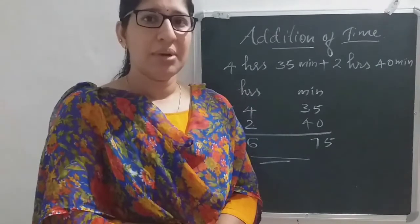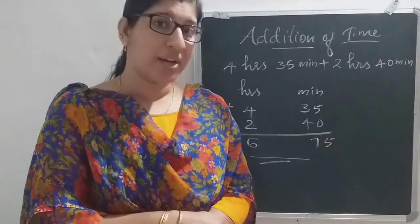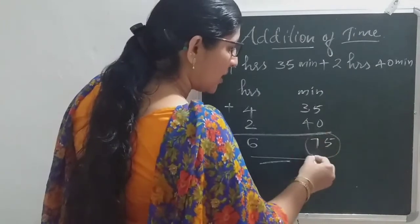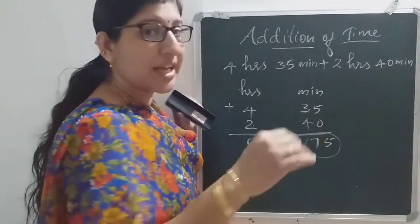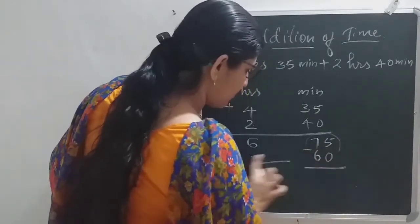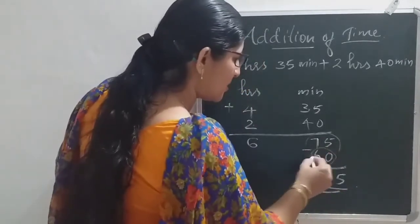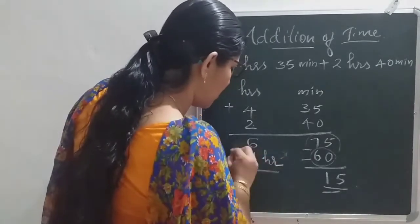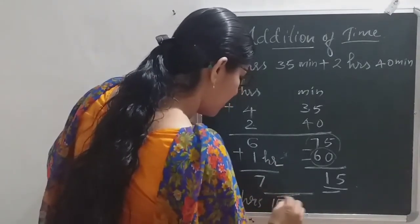Whenever 60 minutes has come, that becomes the next hour. For example, 8 hours 60 minutes is 9 o'clock. So whenever the minutes or seconds are greater than 60, you just subtract 60. 75 minus 60 is 15. This 60 means 1 hour, so that 1 hour you need to add to the hours. So the final answer is 7 hours 50 minutes.